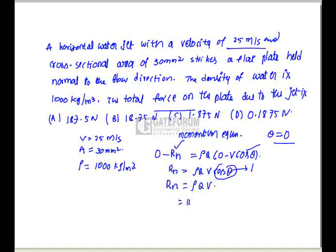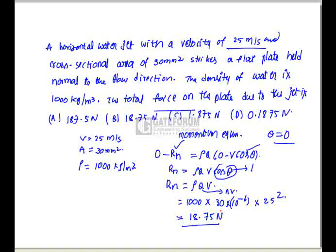Rho is 1000 kg per cubic meter and Q can be written as A into V. That implies A is 30 mm² = 30 × 10⁻⁶ m² into V = 25 m/s. Substituting, Rn equals 18.75 Newtons. So option B is correct.